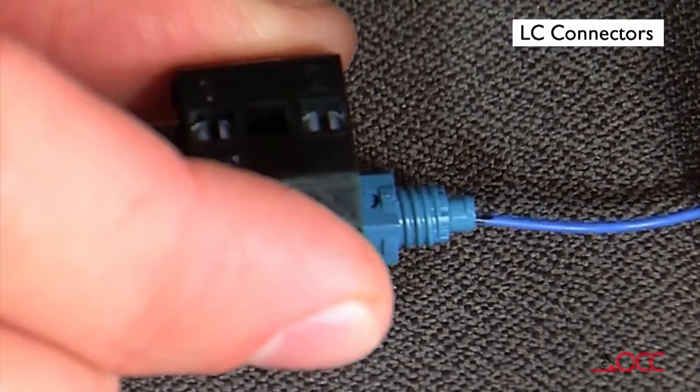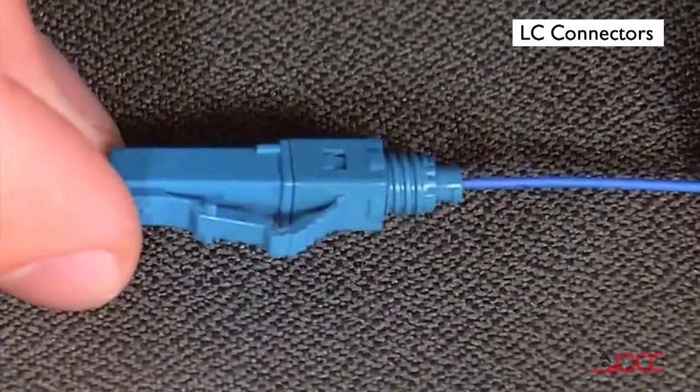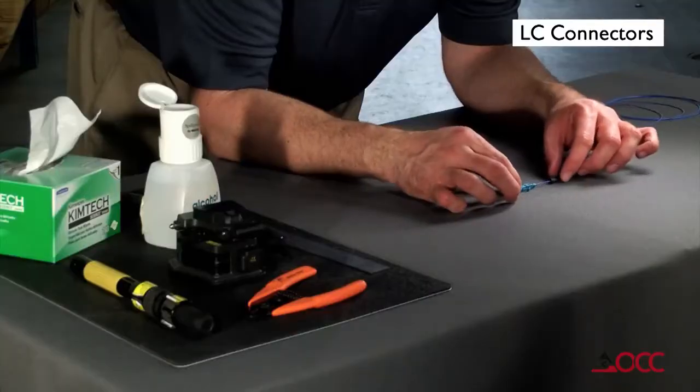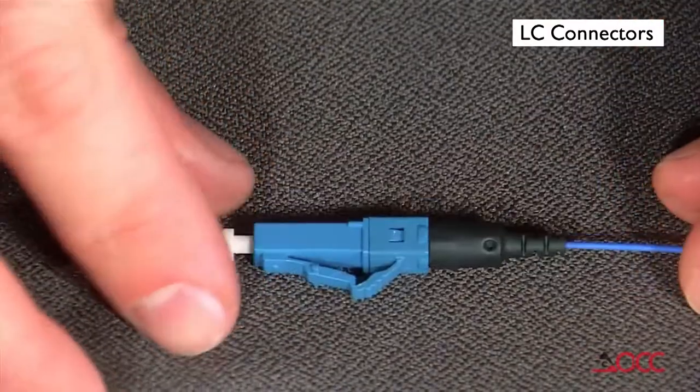Release the wedge clip by squeezing both sides until the wedge clip dislocates itself from the connector body. Remove the wedge clip. Slide the boot up and over the rear of the connector body. Your termination is now complete.